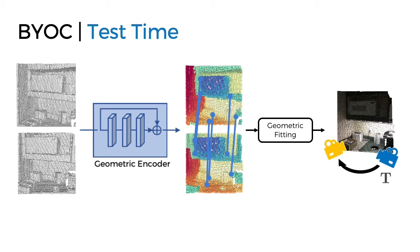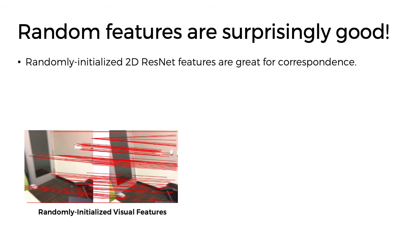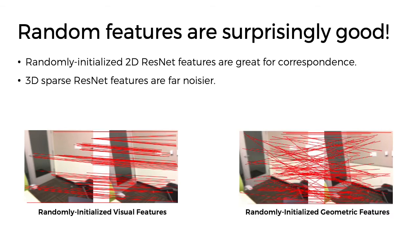But why should any of this work? We find that randomly initialized CNNs are surprisingly good feature extractors. If we consider the correspondences extracted, we see that despite them being noisy, the features are good enough to find correspondences, especially around the doorknob, light switch, and chair. Meanwhile, the 3D CNN features are far noisier. Our core insight is that correspondences from a randomly initialized network can serve as pseudo-labels to bootstrap visual and geometric feature learning.